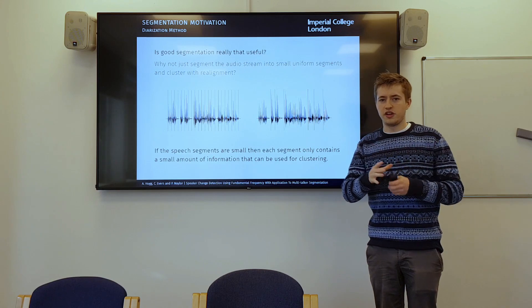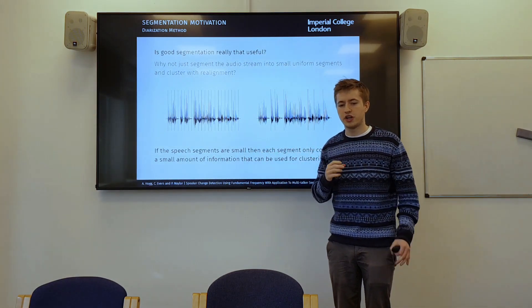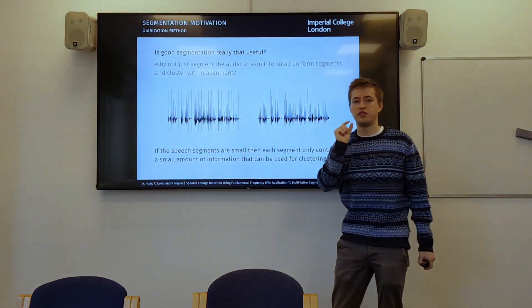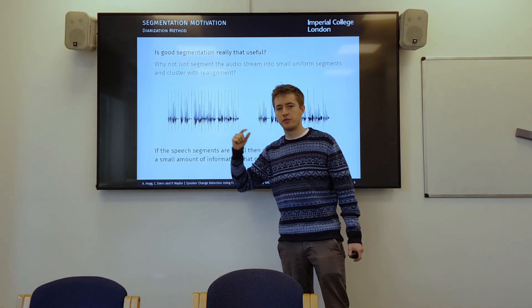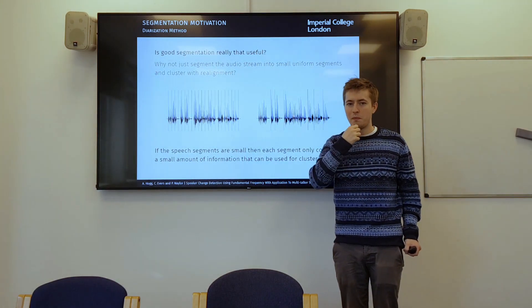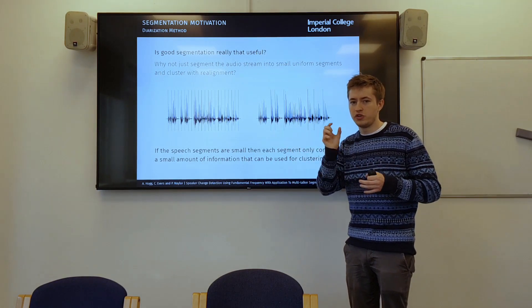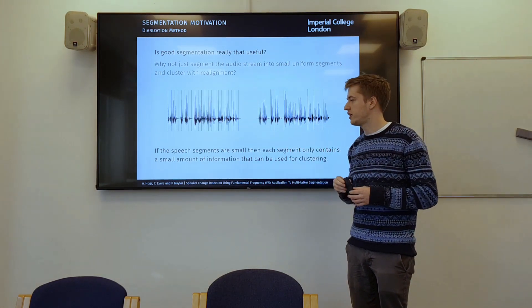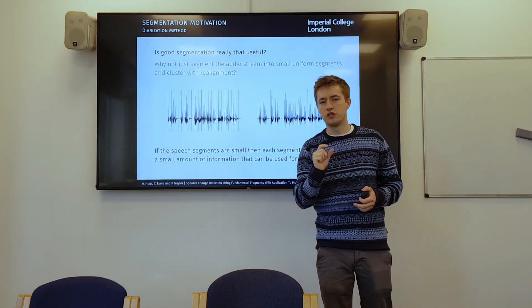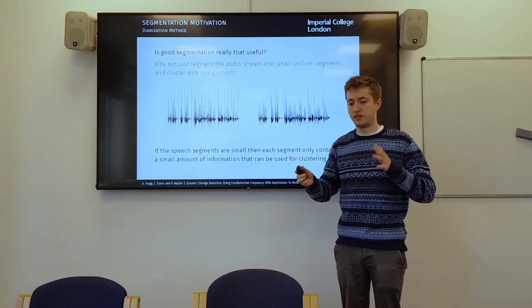So why is the segmentation step actually useful? Because surely we can solve that through the clustering step. If we would just uniformly segment the speech into very small segments, then adjacent segments that belong to the same speaker will just be clustered together. And we'll get the diarization that way. And we don't need to even do the segmentation. We can just cluster with uniform segments and then do a realignment step. Now the problem with this approach is obviously you've got very small segments. So you don't have a lot of information on the speaker when you're trying to cluster that speaker to a particular person.